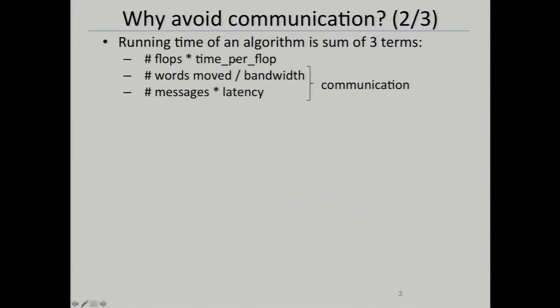There's the time per flop—that's a hardware parameter. The number of words moved is divided by the bandwidth, the seconds per word. The cost of packing all those words into a single message and shipping it over the network has a separate latency cost. Those last two terms are the communication. On modern machines, the time per flop is orders of magnitude less than the time per word—the reciprocal bandwidth—and that in turn is orders of magnitude less than the latency.